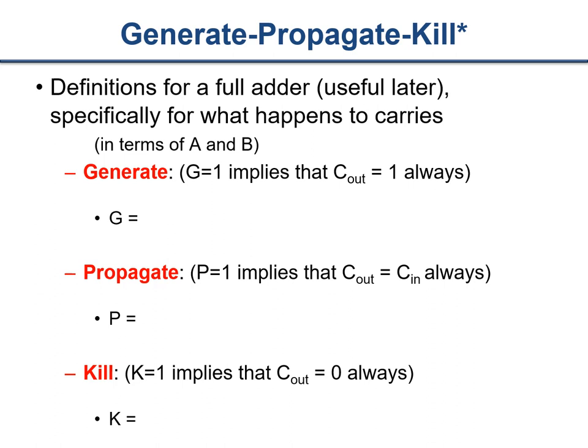In the last class we also introduced the terminology of generate, propagate, and kill. We introduced this nomenclature and for many of you it may not have been entirely clear why we were doing this — it seemed to be throwing more complexity at an already difficult problem. It turns out there is a good reason: we create these generate and propagate signals to eventually help us build adders that are much faster than they otherwise could be.